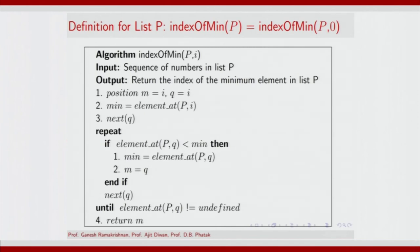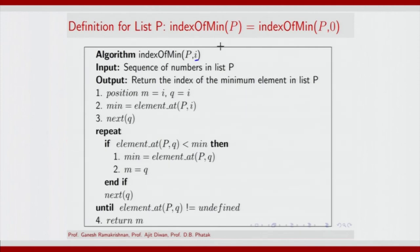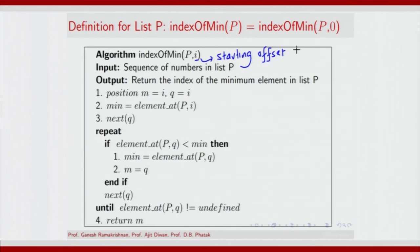What is this index of min? The index of min requires iterating over the elements of P starting at a particular index i to find the minimum element. We have defined index of min more generally in terms of the starting offset i, and we will make use of this particular subroutine in several cases.